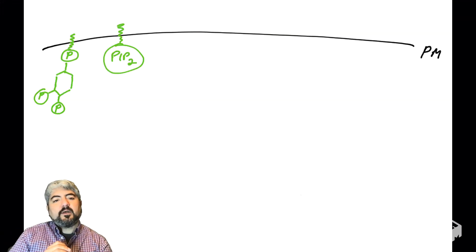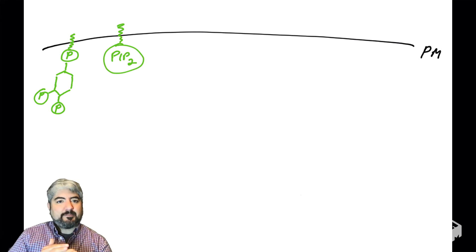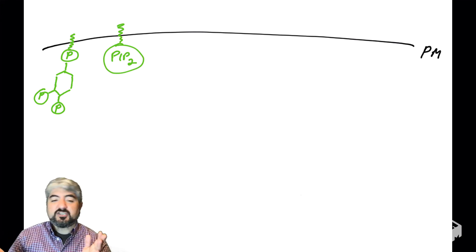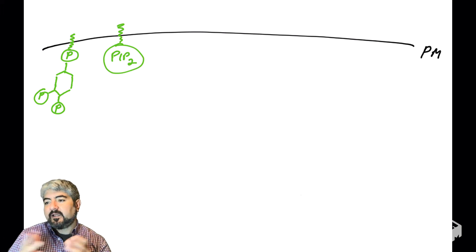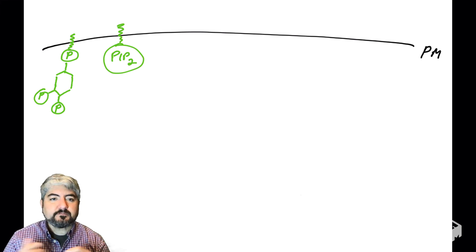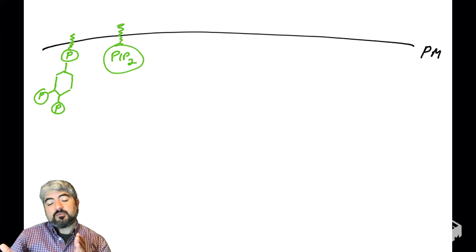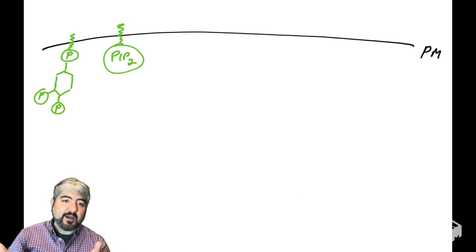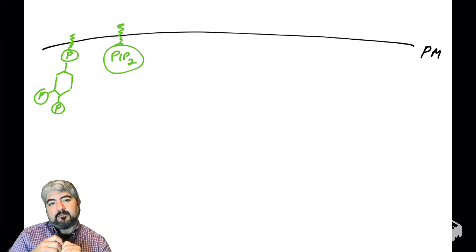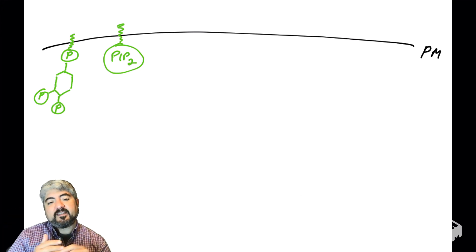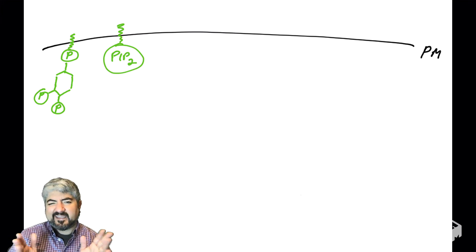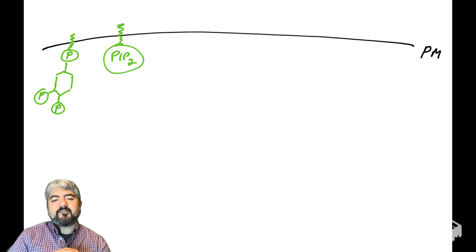Now let's modify PIP2. In a resting cell that's in G1, you find high levels of PIP2. I can draw PIP2 two different ways: just with the word PIP2, or showing the phosphate at the 1-prime position and the phosphates at the 4-prime and 5-prime positions. But typically I just write PIP2.